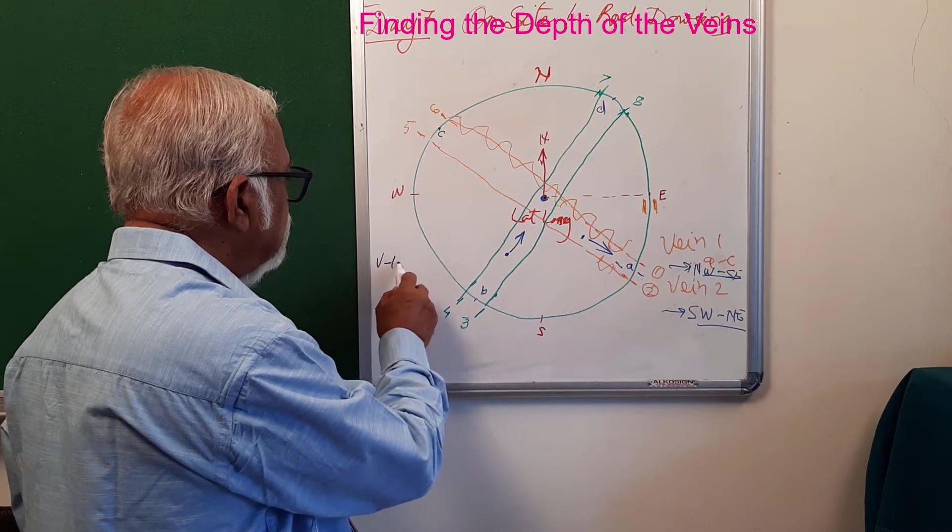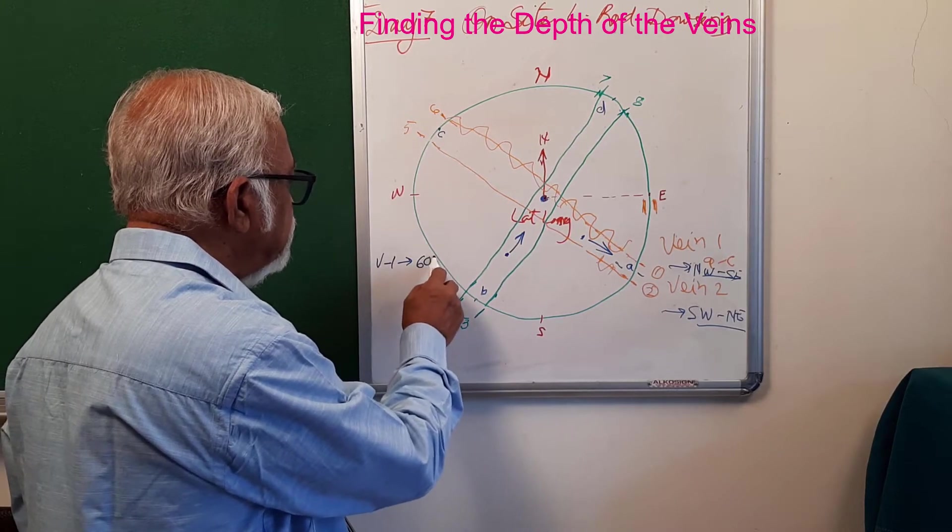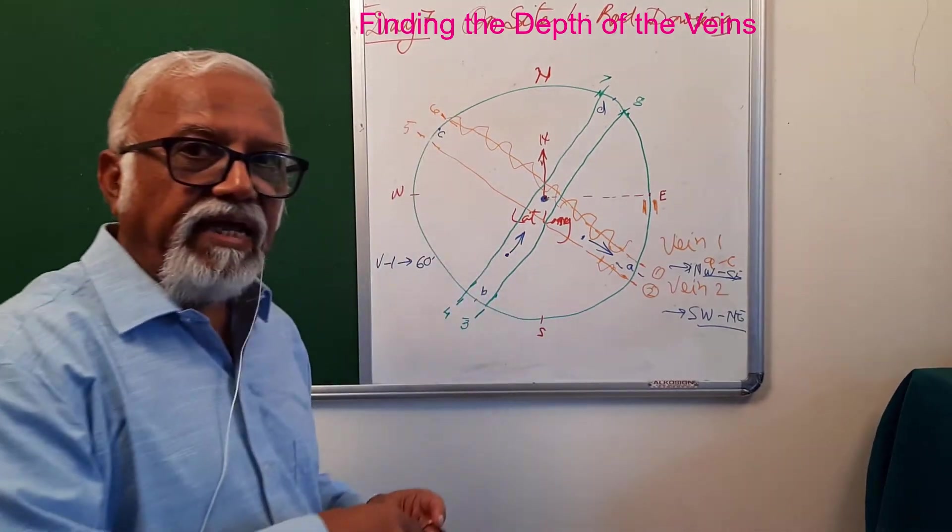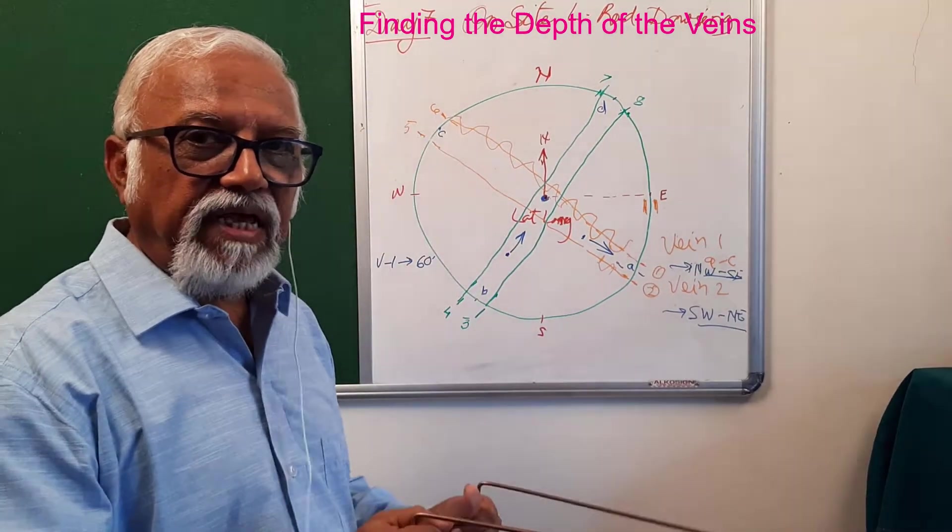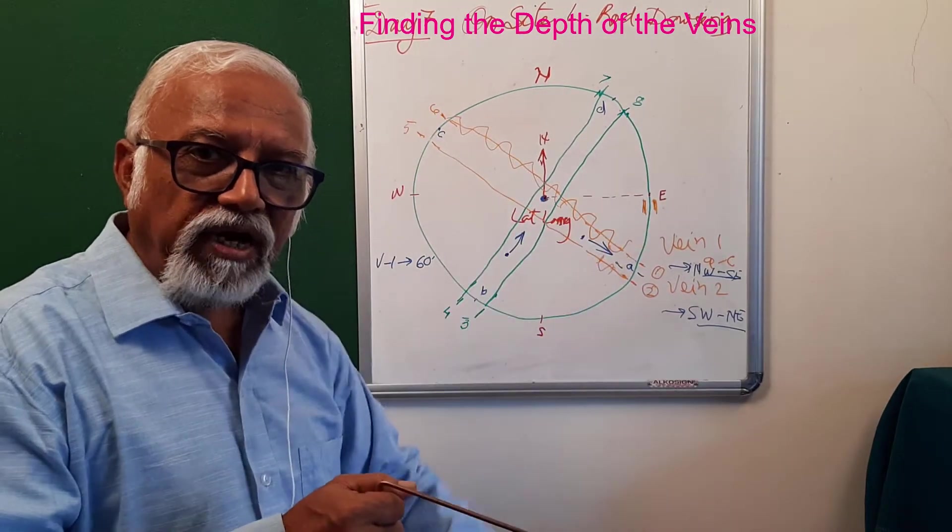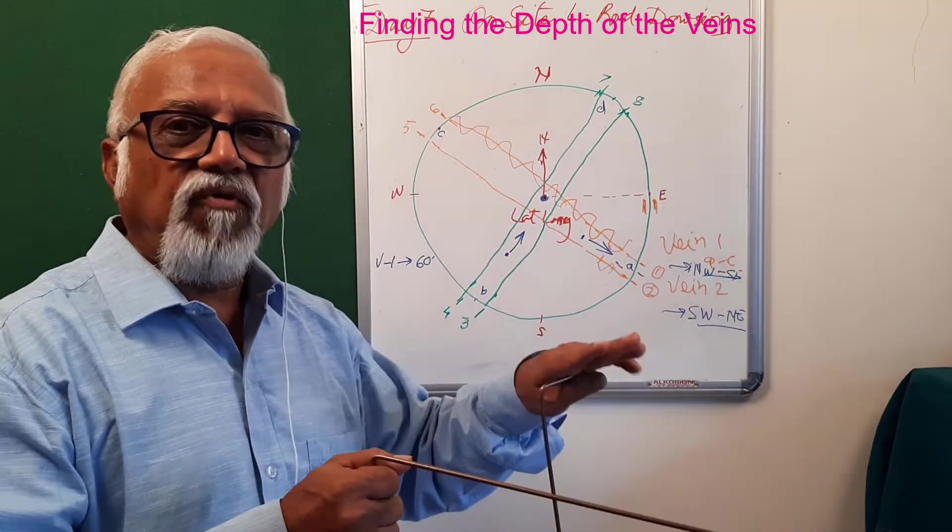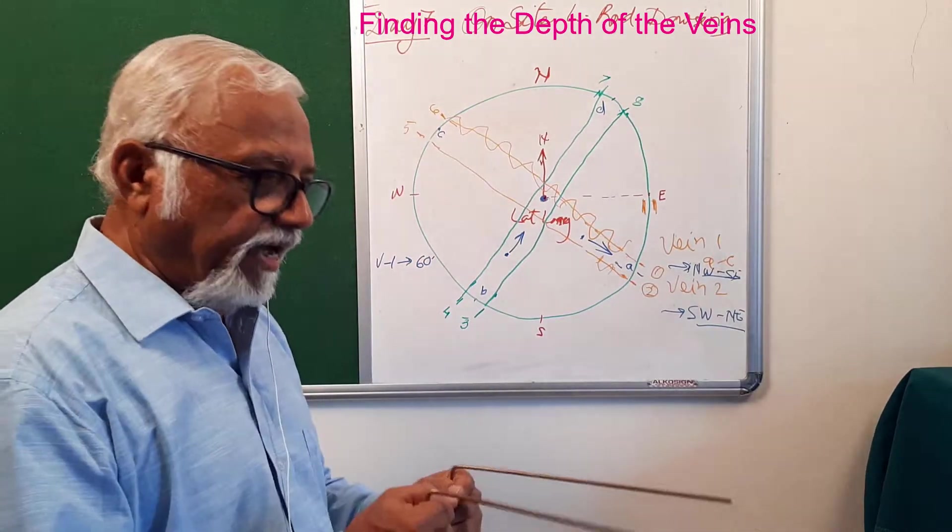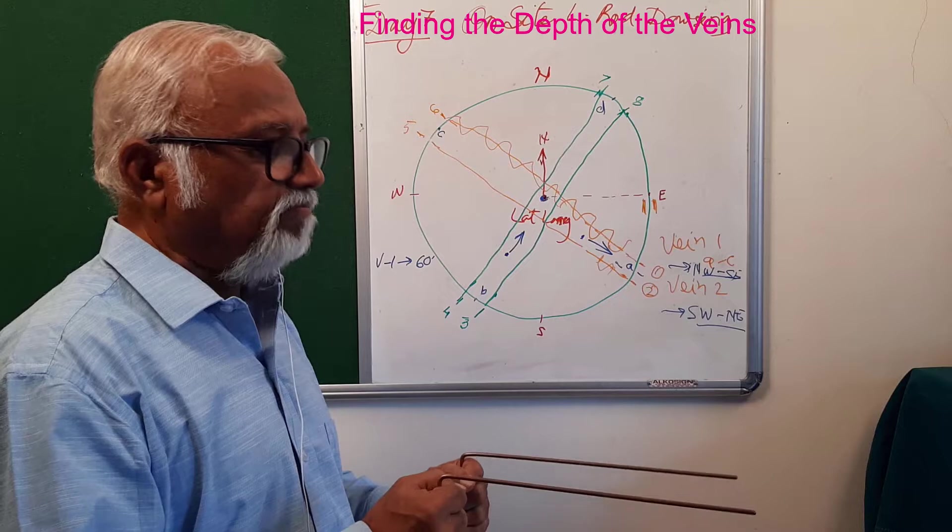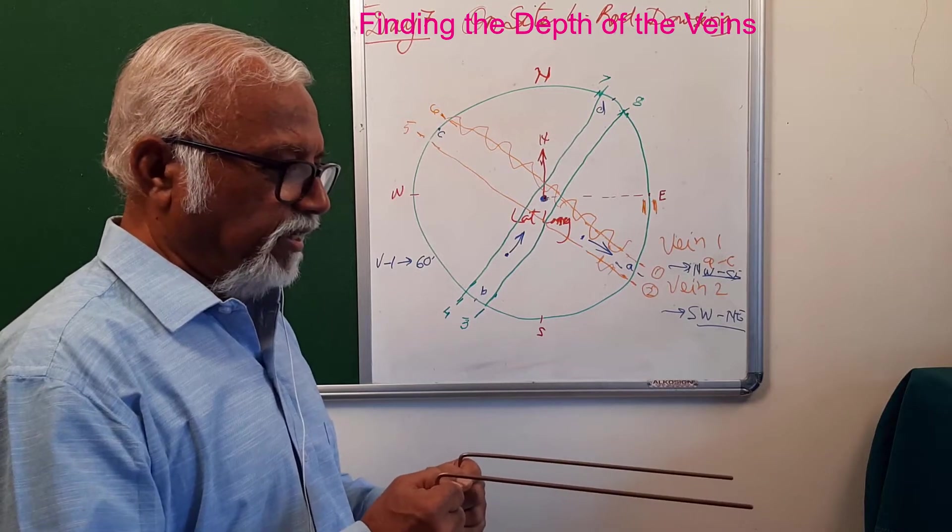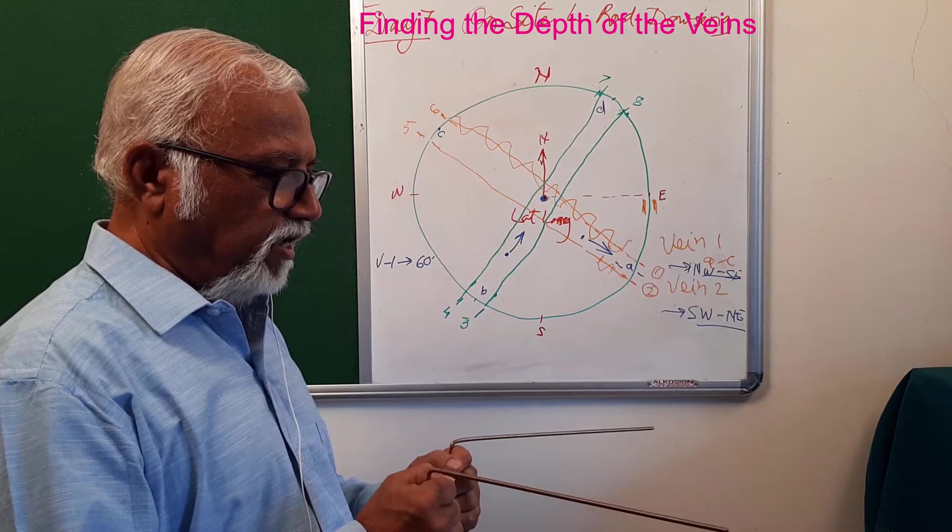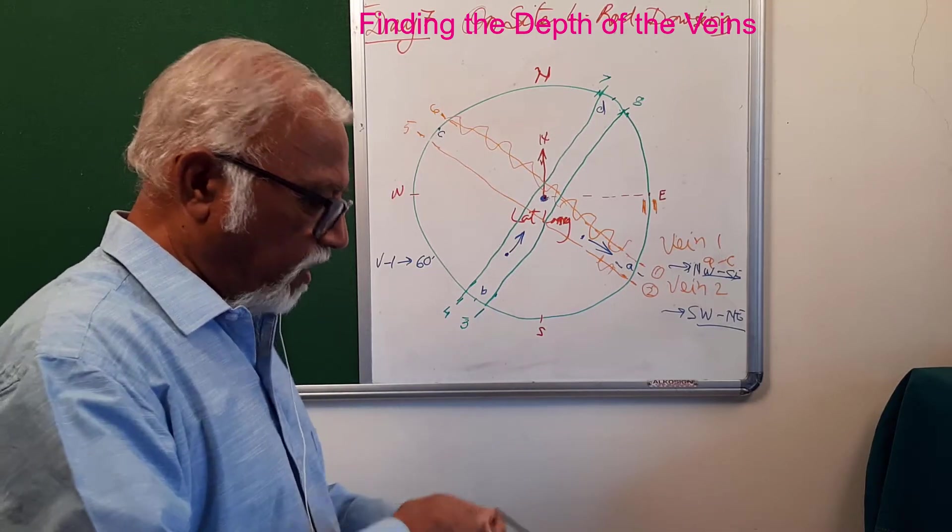I stand on the same place and program myself for the lower depth of the vein. I have my rods in search position and start counting - 10, 20, 30, 40, 50, 60, 70, 80, 90. I get the second depth at 90 feet.